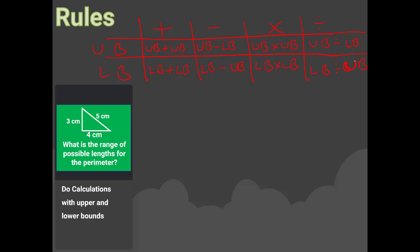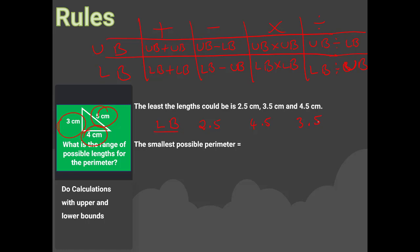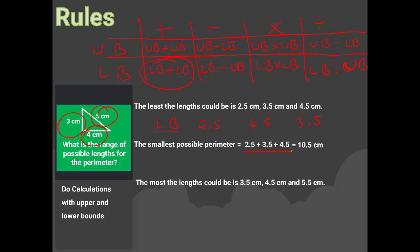We want to calculate the perimeter of a triangle. The least possible lengths (lower bounds) are: 2.5, 3.5, and 4.5. The smallest possible perimeter is found by adding all the lower bounds together, following the addition rule. Adding 2.5 + 3.5 + 4.5 gives 10.5, so the lower bound perimeter is 10.5 cm.